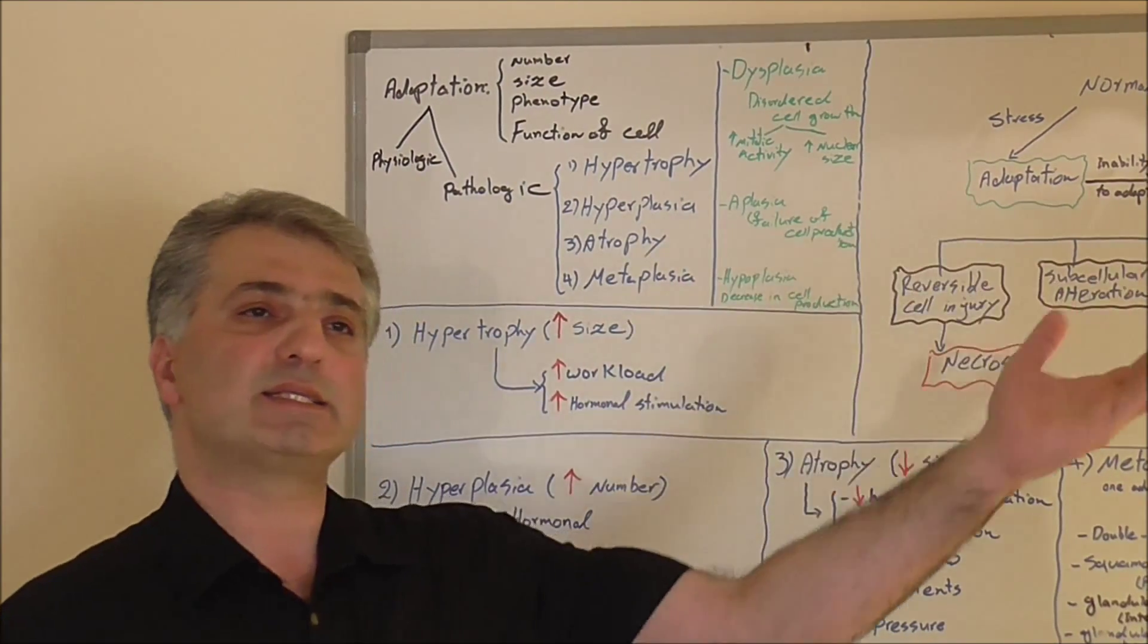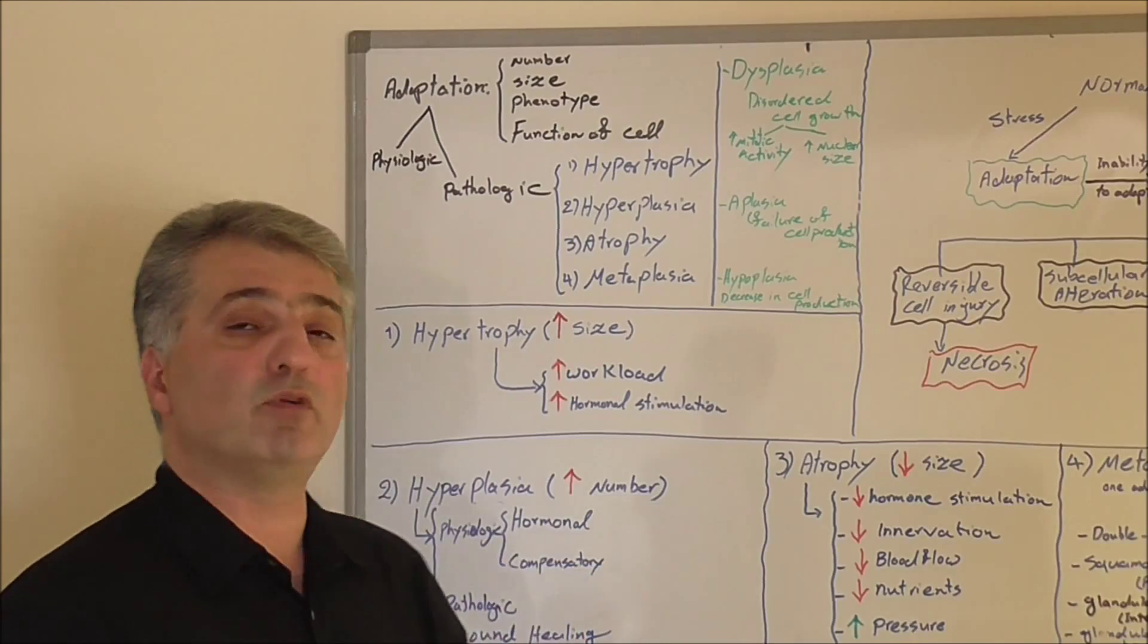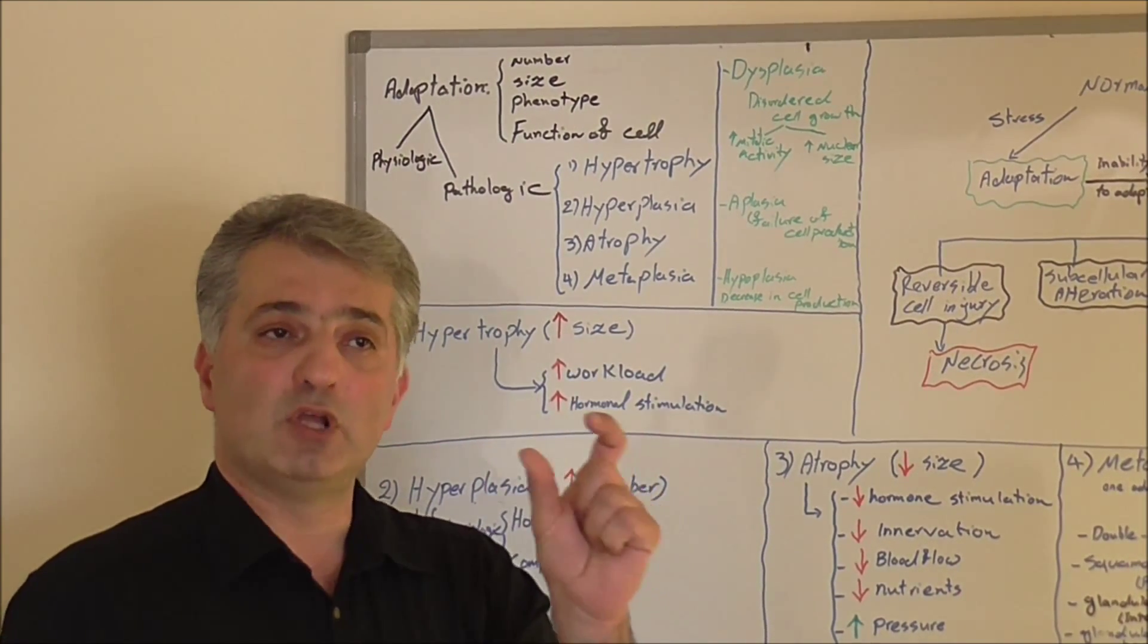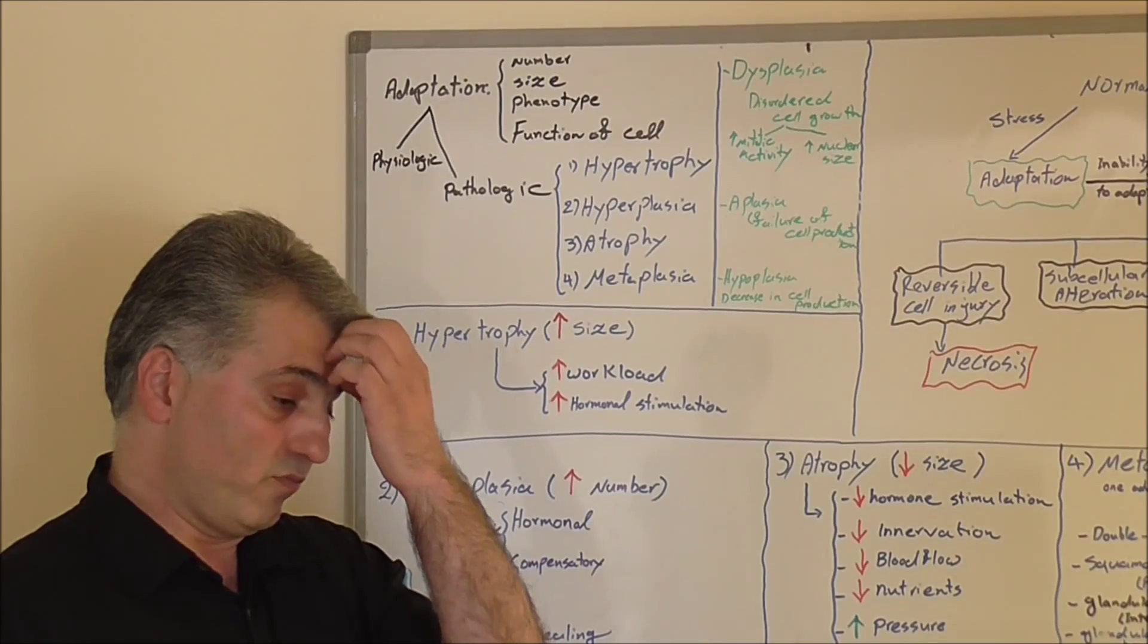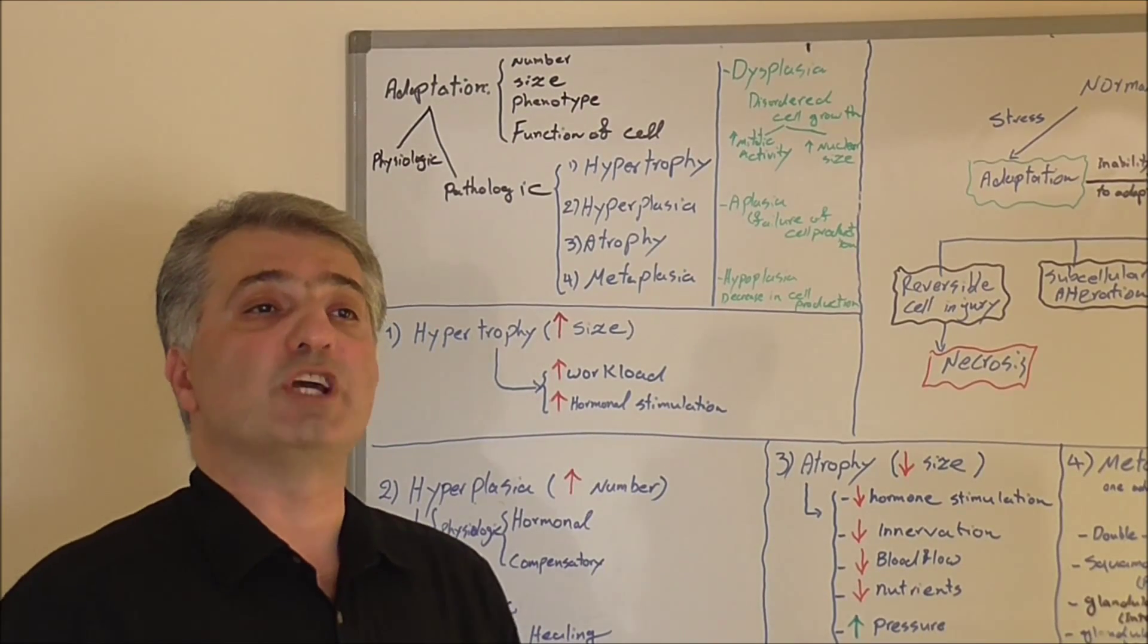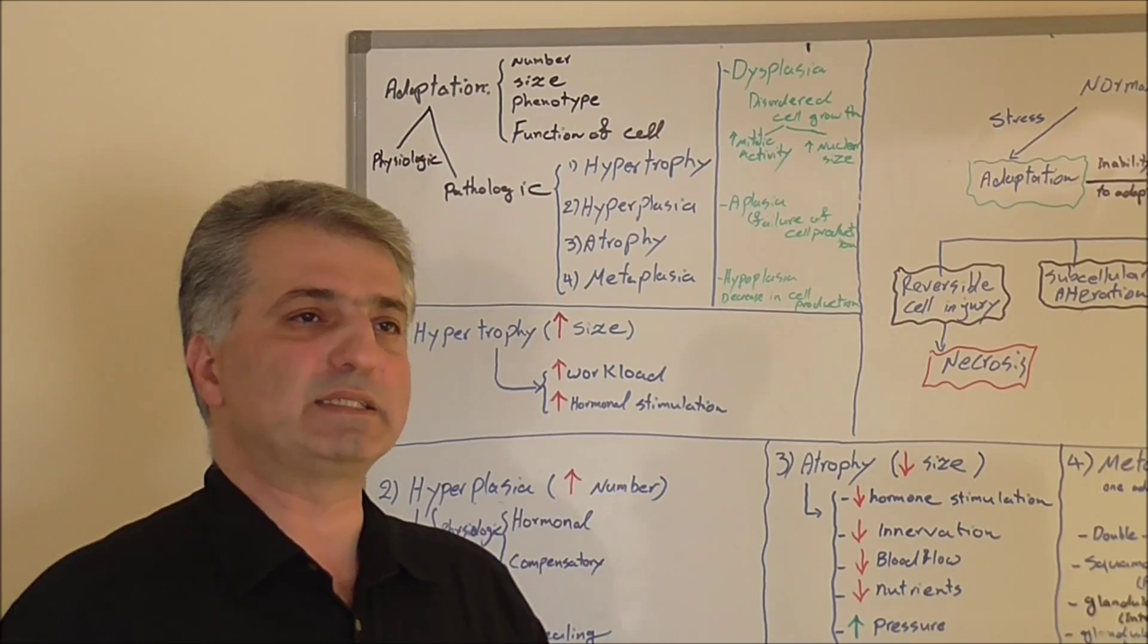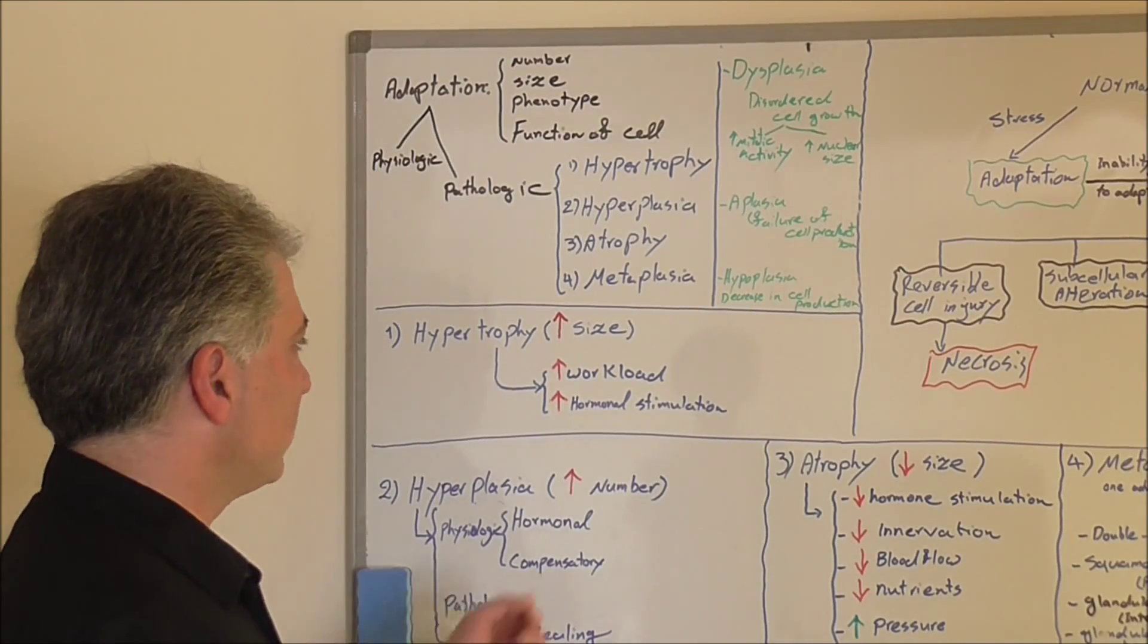The heart, the left ventricle in this case, will adapt to the situation, and the thickness of the ventricle will increase. Hormonal stimulation sometimes causes hypertrophy, like changes in breast during pregnancy, during puberty, and many other things where the hormone can stimulate and increase the size of organs or tissues in general.